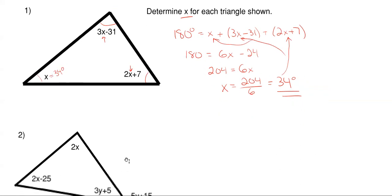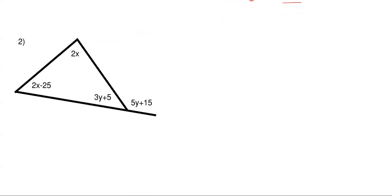Our second one is going to be a little bit more difficult, because instead of just having one unknown variable, we are going to have 2. We have x over here with 2x minus 25 for this angle. We have 2 times x for this angle up here, and now we're incorporating a y variable of 3y plus 5 for this last angle inside the triangle, and then we are also told that this angle outside of the triangle is 5y plus 15.